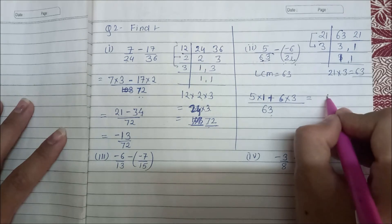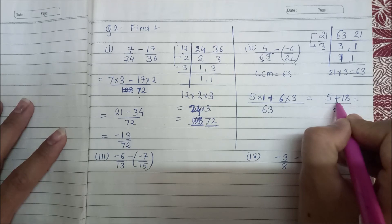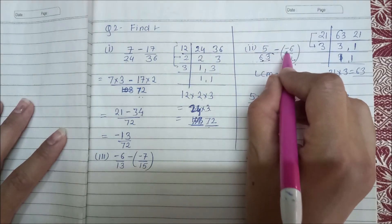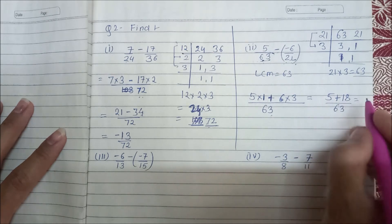So 5 times 1 is 5 plus 6 times 3 is 18 upon 63. Plus because minus minus equals plus.